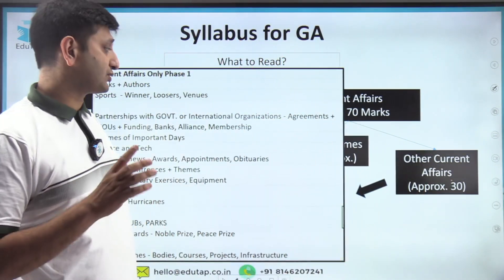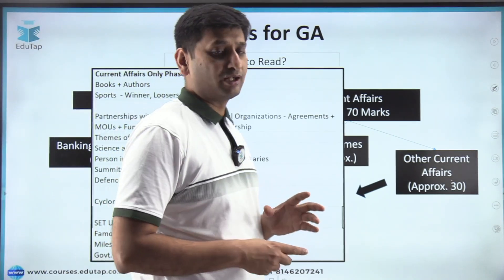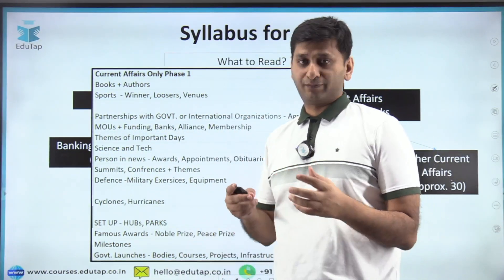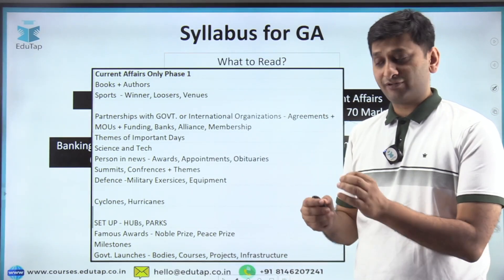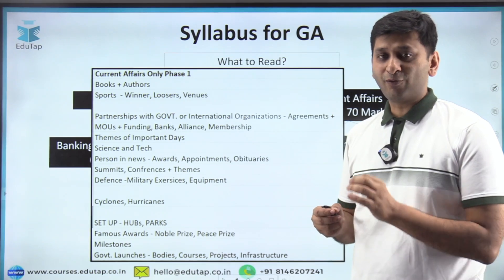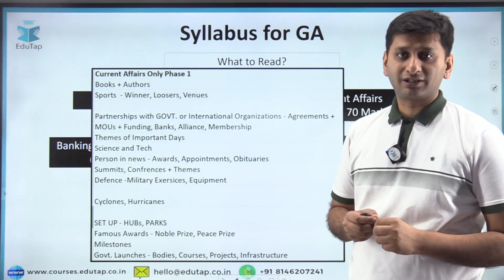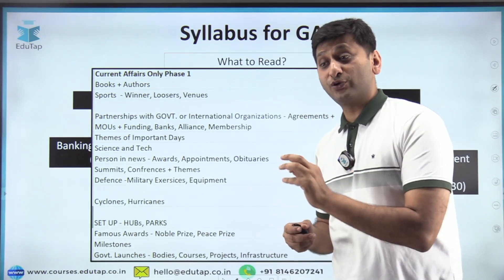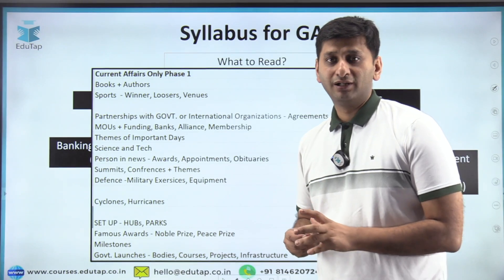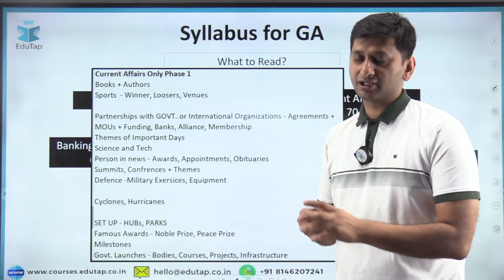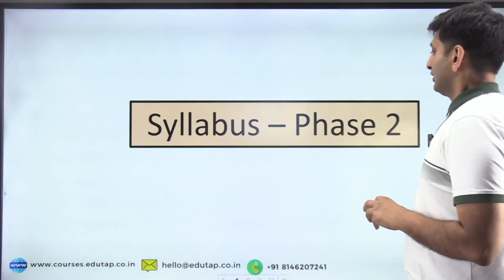There's no doubt that tough questions are appearing now in GA. You have to study in-depth. All event-related news must be followed. RBI doesn't just ask who won a tournament — it may ask about controversies around it. You have to be smart. This is now a game of depth, not superficial knowledge.